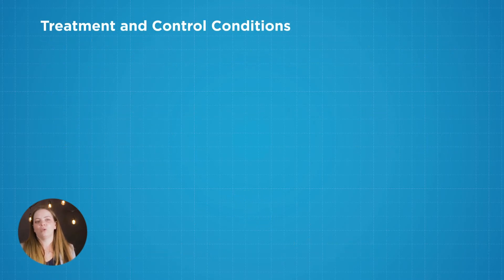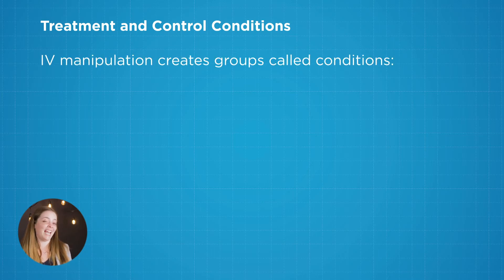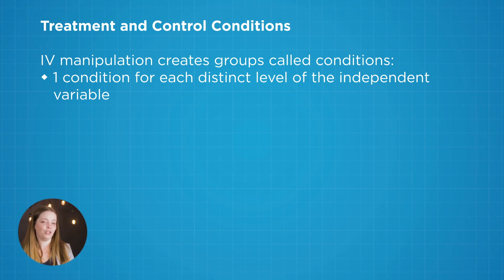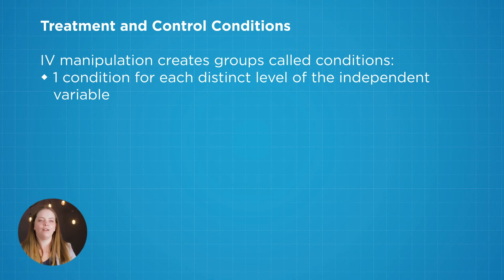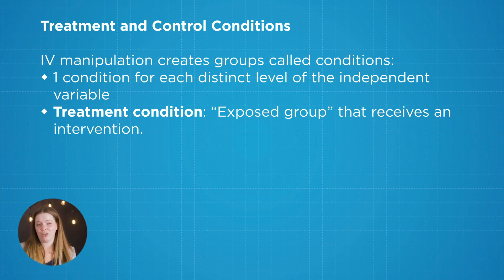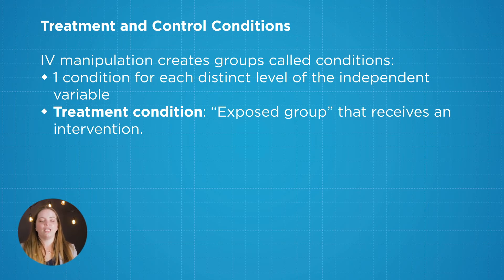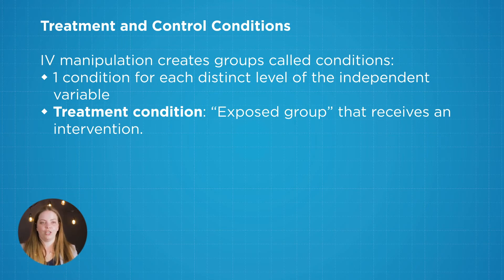Let's go back and talk quickly about the two different conditions we're assigning participants to. We either have a control condition or an experimental condition. So I either have a Coca-Cola condition — a treatment condition where I'm giving them some kind of dose of something — or a control condition where we didn't do anything to them, meaning no caffeine.